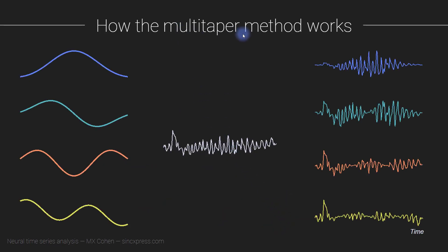Okay, so how does the multi-taper method work? Well, we start with our snippet of data. So this is just a piece of EEG data, let's say this is like 500 milliseconds long.